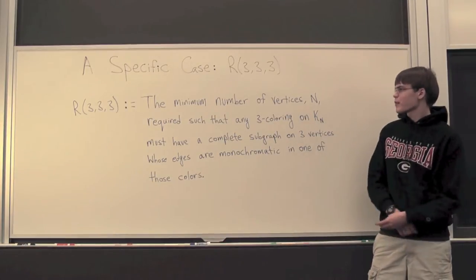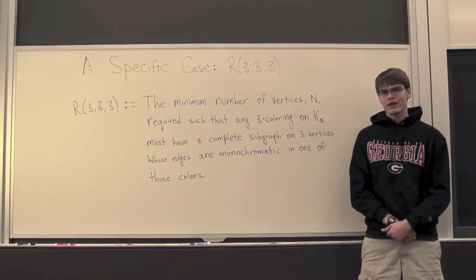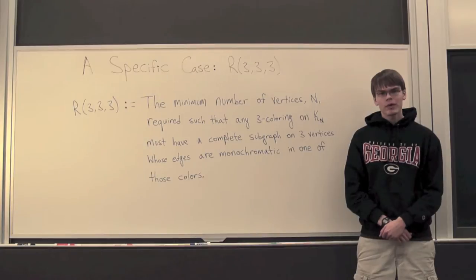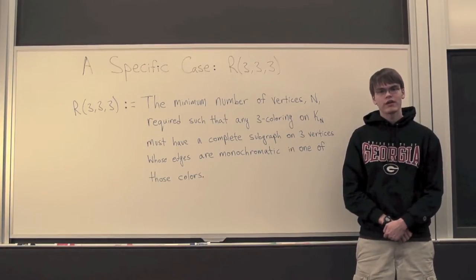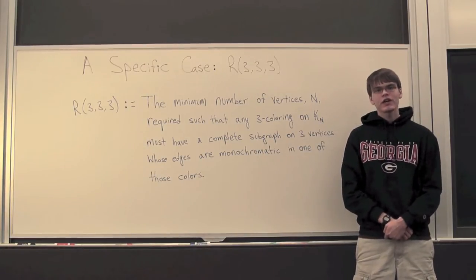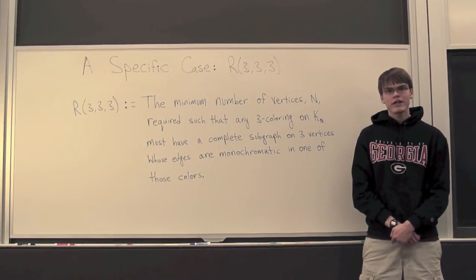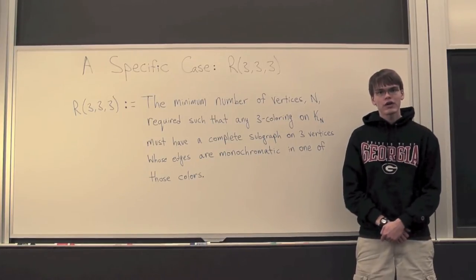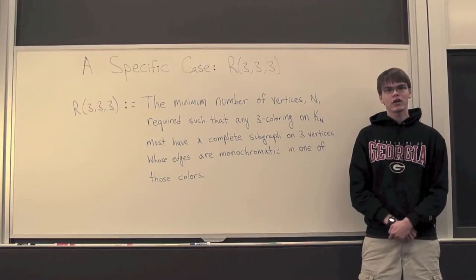Now, recall from the previous video that R(3,3,3) is defined as the minimum number of vertices N required such that given any three-coloring on KN, we're going to be guaranteed a monochromatic triangle in one of those three colors.